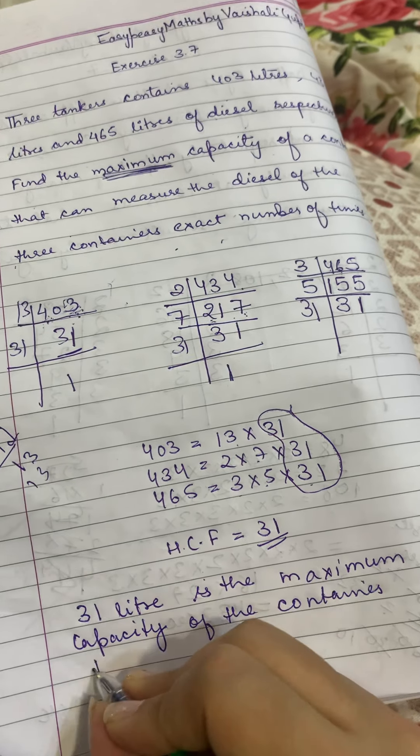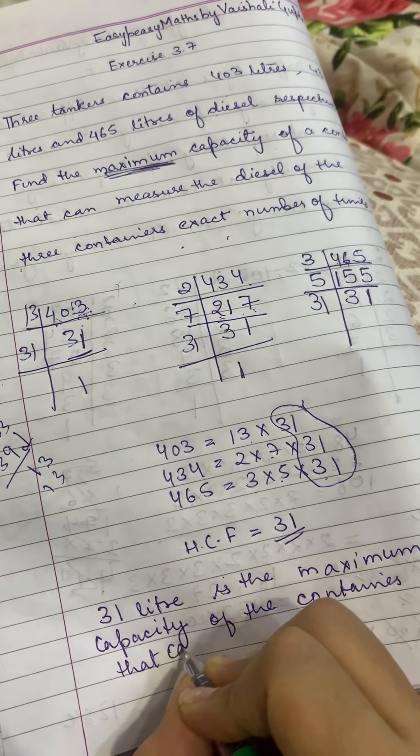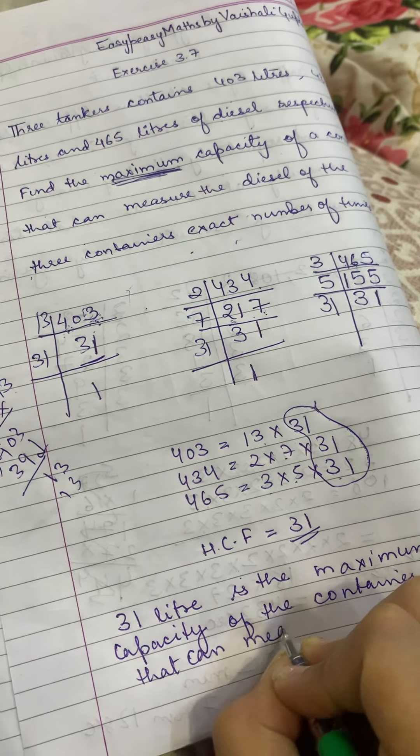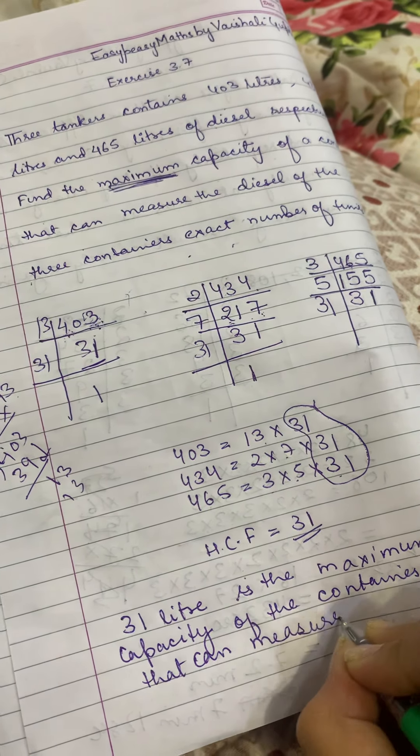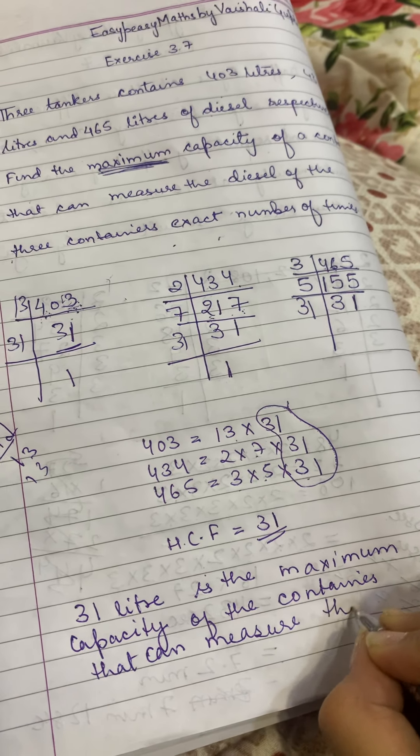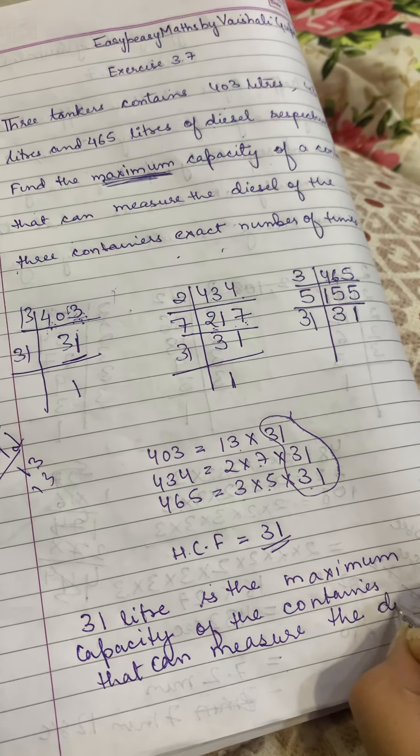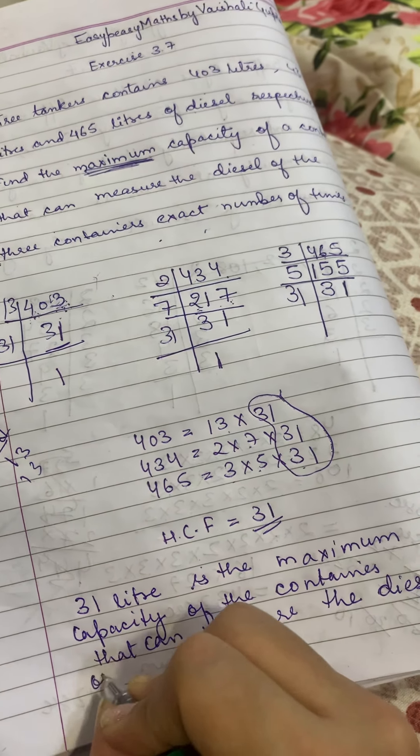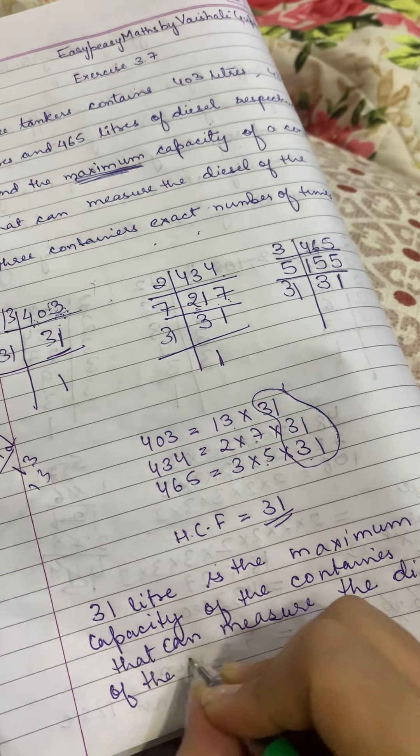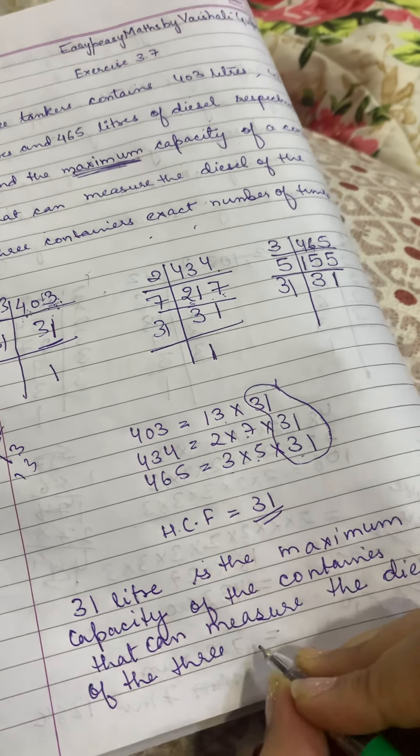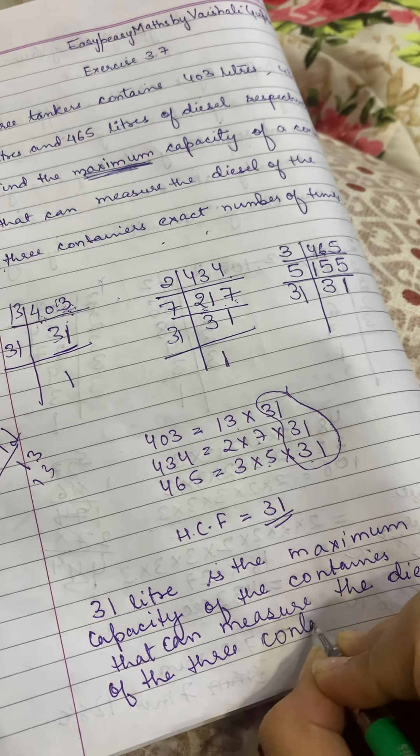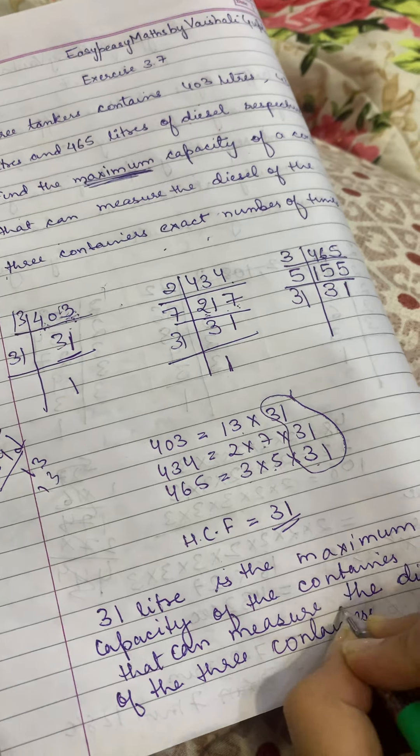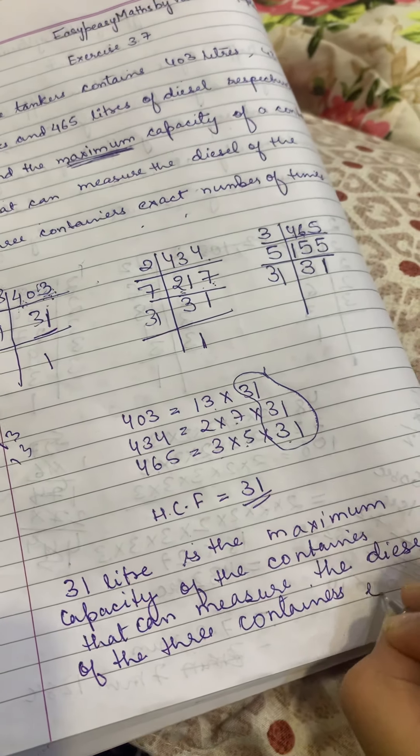This means that 31 is the maximum capacity of the container that can measure the diesel of the three containers exact number of times.